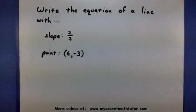Hello, in this example we're going to write the equation of a line and that line must have a slope of 2/3 and it must go through the point (6, -3).